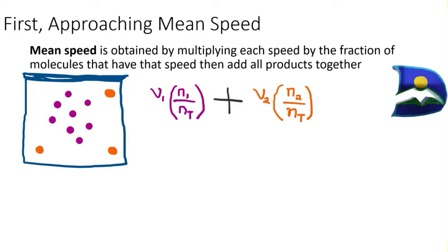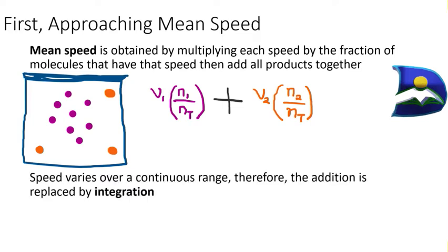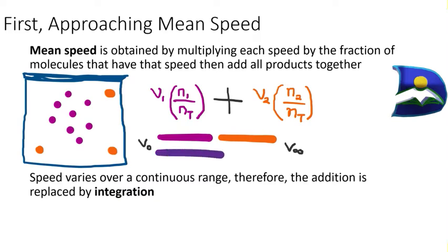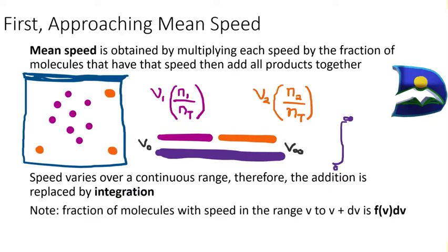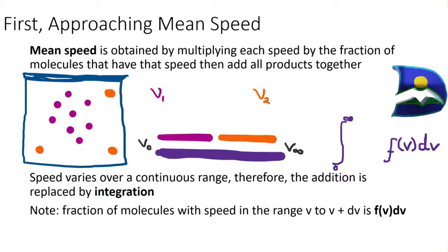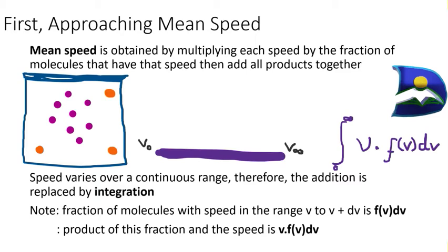This simple discrete approach is not realistic because in real life, molecular speeds are a continuous experience. This continuous range leads us to replace the addition sign with integration. Going from zero velocity to infinity, we look at the full spectrum of speeds, using integration from zero to infinity, with f(v)dv representing the fraction of molecules at each specific speed multiplied by that speed.